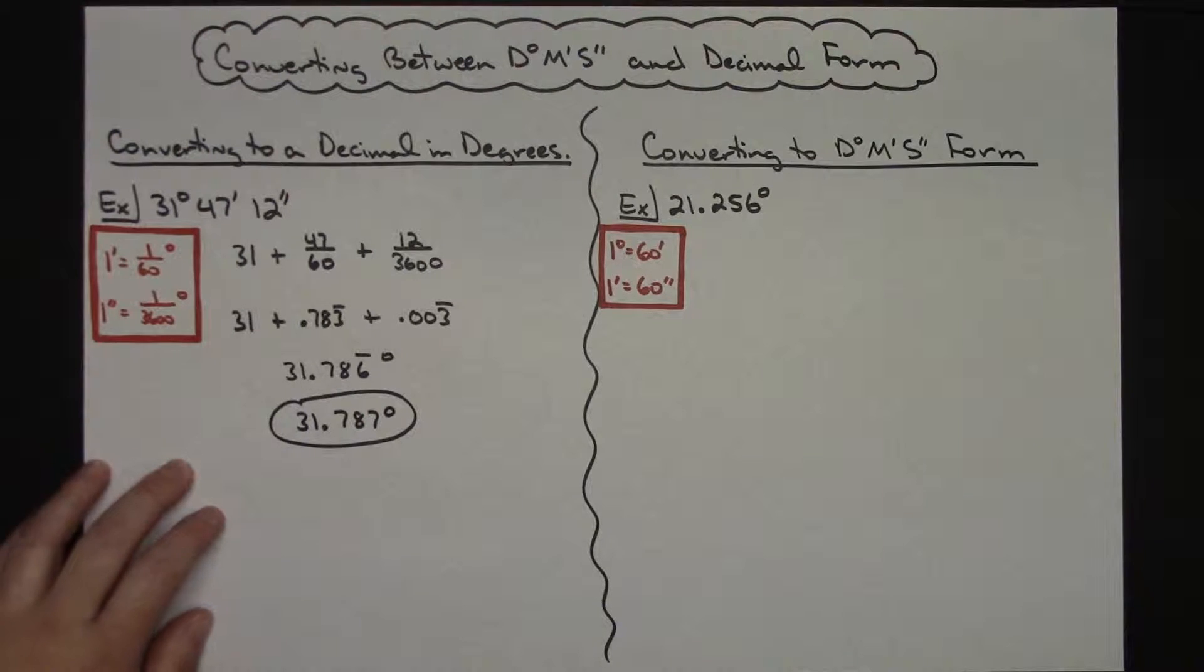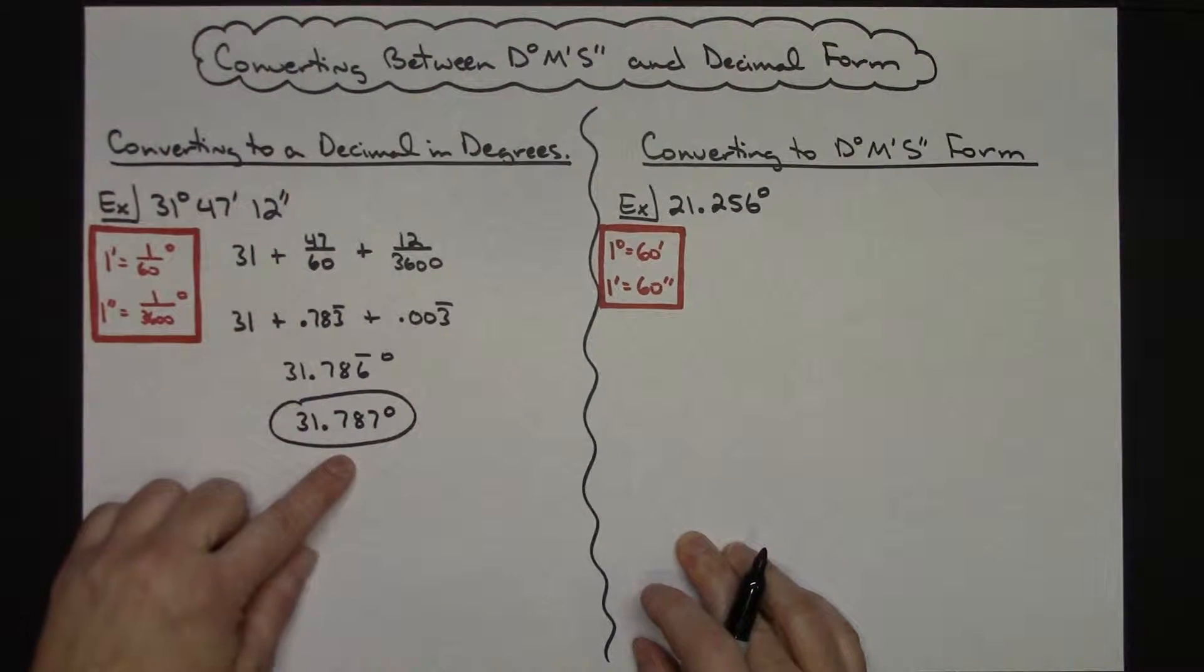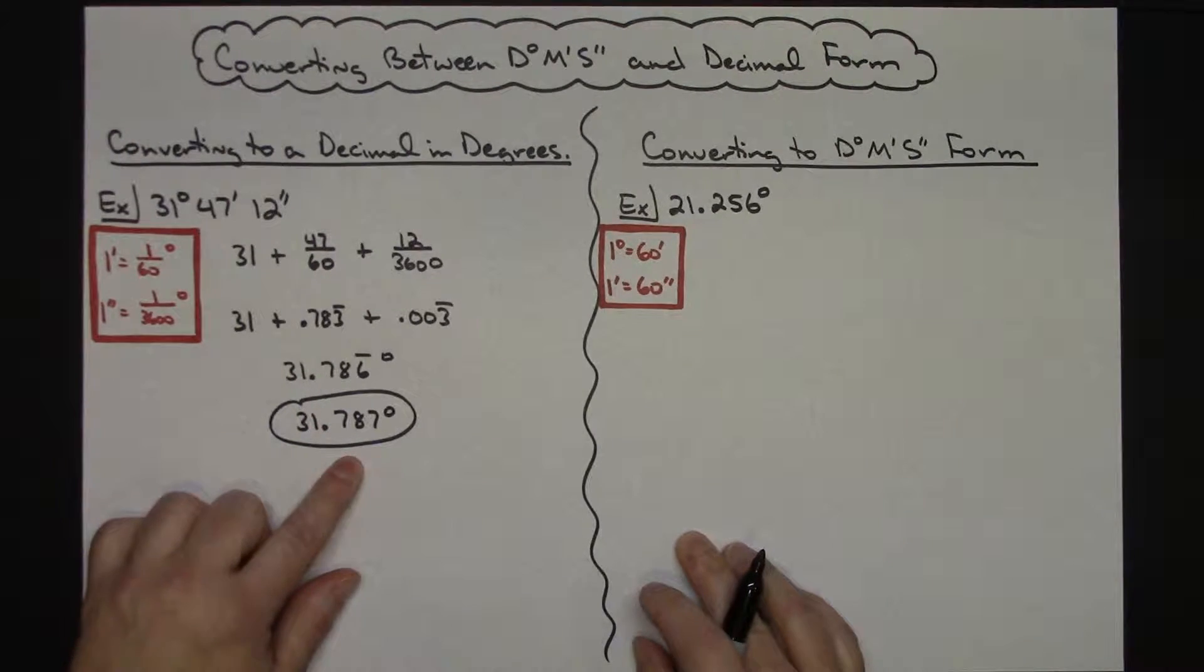So one quick example there showing you how to go from degrees, minutes, and seconds into a decimal that is in degrees.